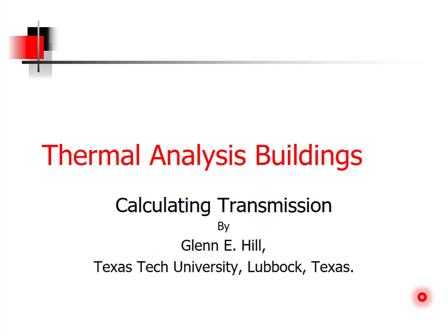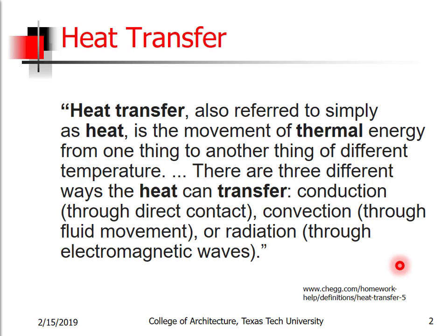In the previous lecture we talked about the conductance of materials and their ability to insulate, and so now we're going to talk about how that works in the case of heat transfer. Heat transfer, also referred to simply as heat, is the movement of thermal energy from one thing to another thing of different temperature, always moving from the hotter thing to the colder thing. There are three different ways in which heat can transfer. The one we're primarily going to focus on right now is conduction — the actual movement of heat through a material through direct contact.